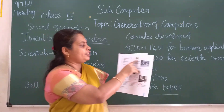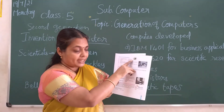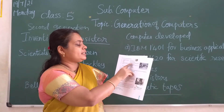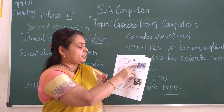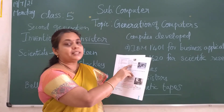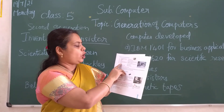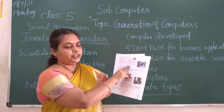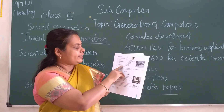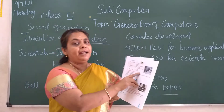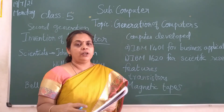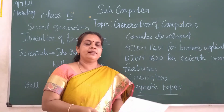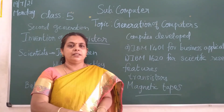Let me once again repeat the features: the component used is transistors; the speed is fast and reliable; the size is smaller than the first generation; the secondary memory used is magnetic tapes; the cost is less expensive than the first generation; and the languages used are COBOL and FORTRAN. See your textbook, learn and memorize these. We will see other generations in the next class. Thank you.